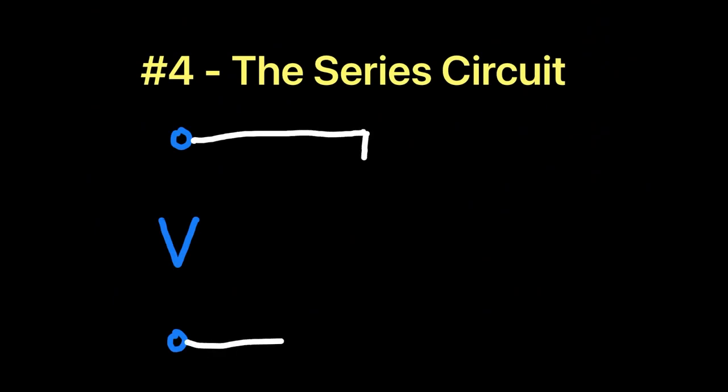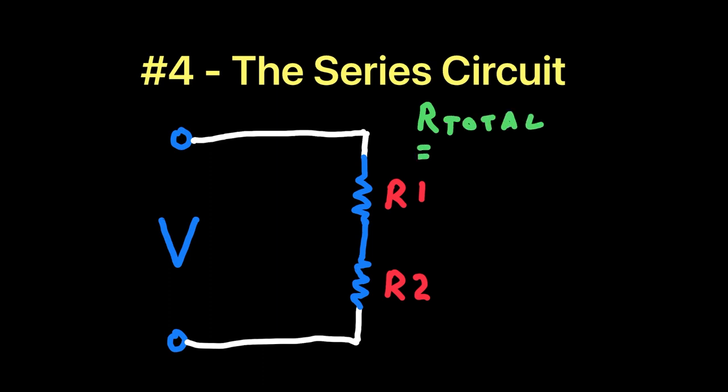In a series circuit, there are two or more loads that are connected end to end. The total resistance of the circuit is the sum of the resistances of each load. Thus, in this circuit, the total resistance would be R1 plus R2.